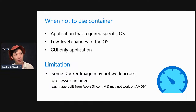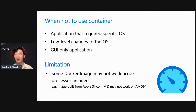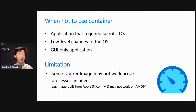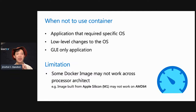And the last case for when not to use containers is for applications that have a UI. Containers run as background processes or CLI applications — they cannot simulate a UI. So for applications with a UI, they cannot run in a container. For example, you cannot pack Microsoft Word into a container. As for limitations, sometimes a Docker image may not work across processor architectures. For example, my MacBook Air uses Apple Silicon M1 with ARM64 v8 architecture, and an image built from my M1 may not work on AMD64 like Intel or normal processor architectures. You have to find another workaround to build the image to work across architectures.